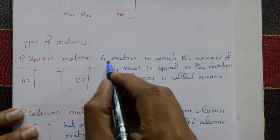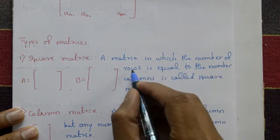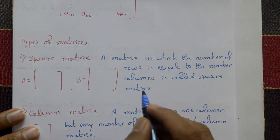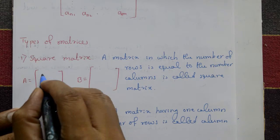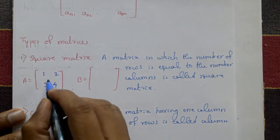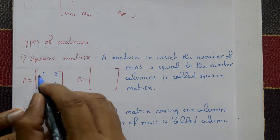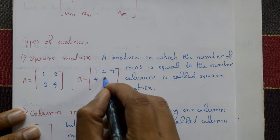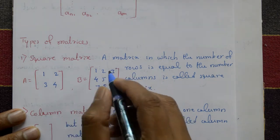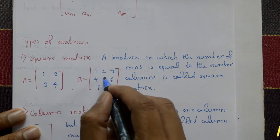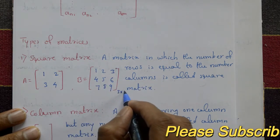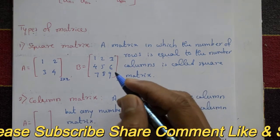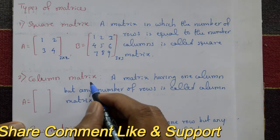First type: square matrix. A matrix in which the number of rows is equal to the number of columns is called a square matrix. For example, matrix A with elements 1, 2, 3, 4 has 2 columns and 2 rows — that is a square matrix of order 2×2. Another example is 1, 2, 3, 4, 5, 6, 7, 8, 9 with 3 rows and 3 columns, so order is 3×3. Both are square matrices.